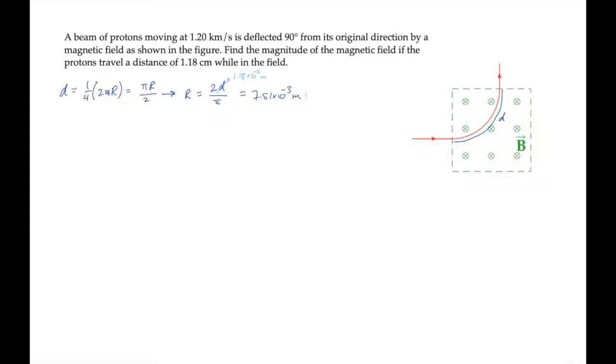Now we can find the magnetic field magnitude by applying Newton's second law. The particle travels along a circular path, so we know the net force on it is directed towards the center of the circle. That force is the magnetic force with this magnitude, where the velocity and magnetic field are perpendicular, so sine of theta equals 1.